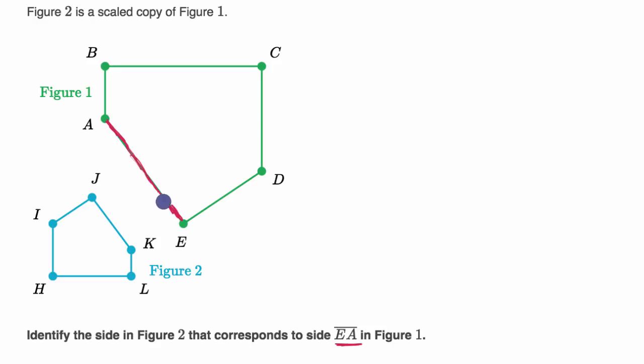So one way to think about it is, the longest side in Figure 1 is side BC. This is the longest side in Figure 1. And then the longest side in Figure 2 is HL. So it looks like BC corresponds to HL.